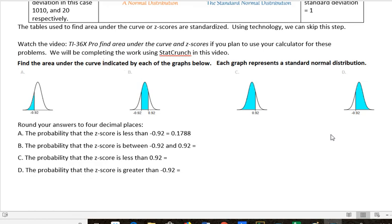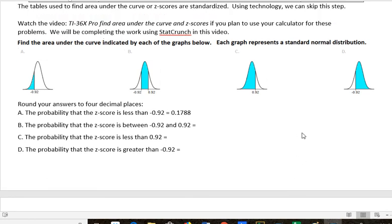A thing to remember if you are using the tables is that the tables always give you the values to the left. So if you wanted to find this one, you would find the value knowing that it's to the left. And then you would say 1 minus that value to get the area on the right. But again, that's not how I'm suggesting that you do it.